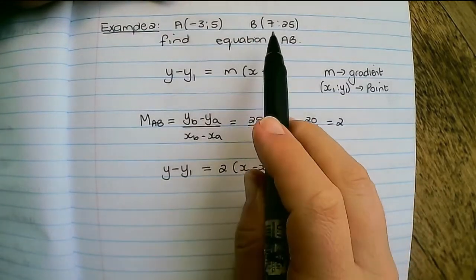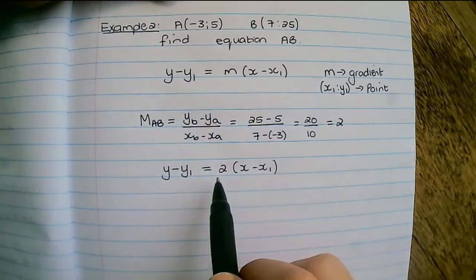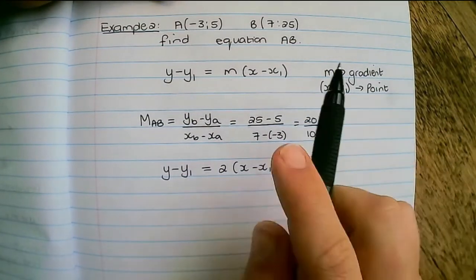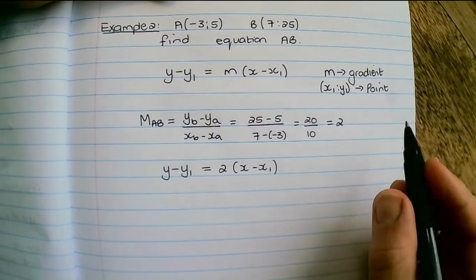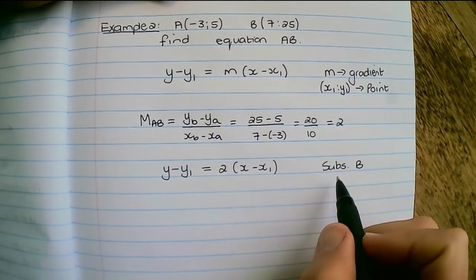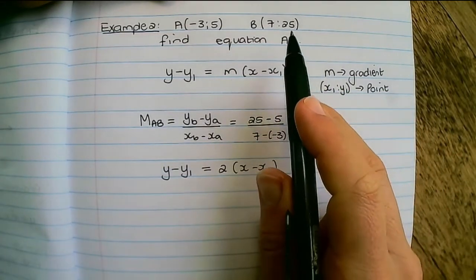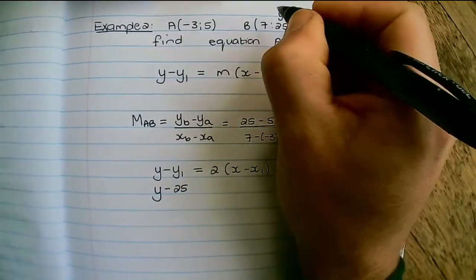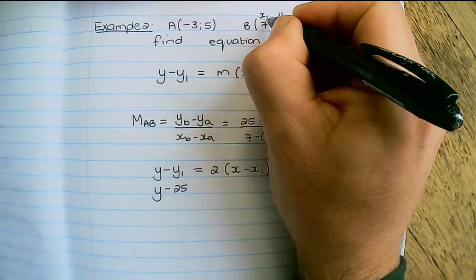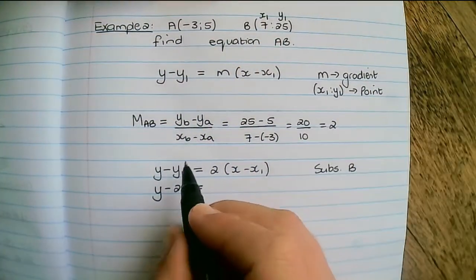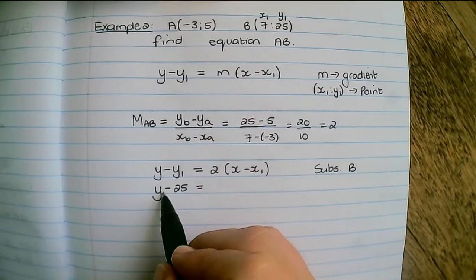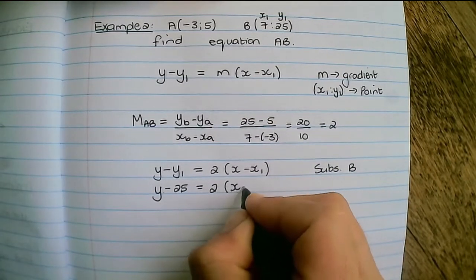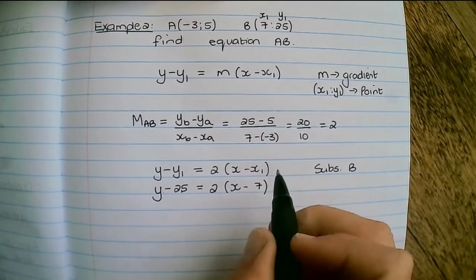Now we can substitute any one of the two points into this equation in order to solve the equation of line AB and as in our previous example I'm going to substitute point B. The y value of B is y1 and the x value of B is x1 so I'll have y minus y1 equals 2 times x minus x1 which is 7.